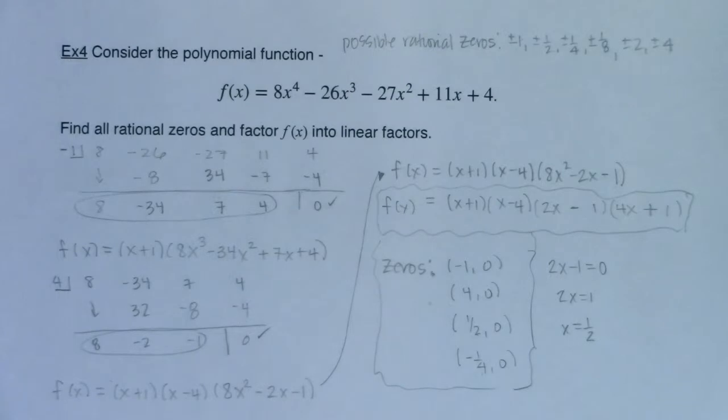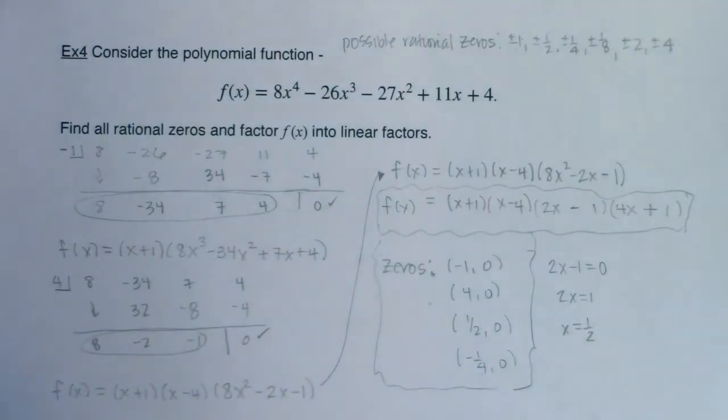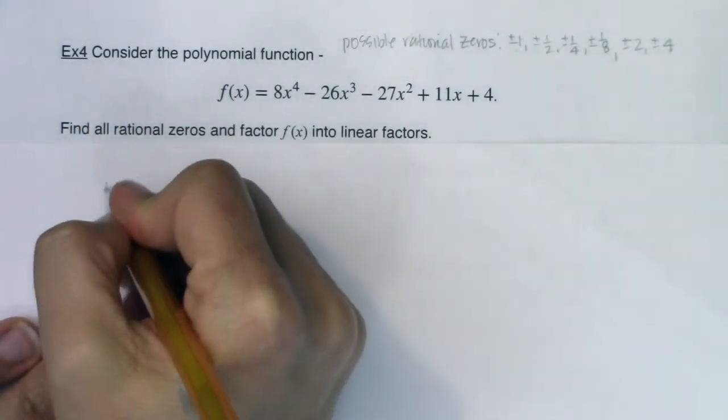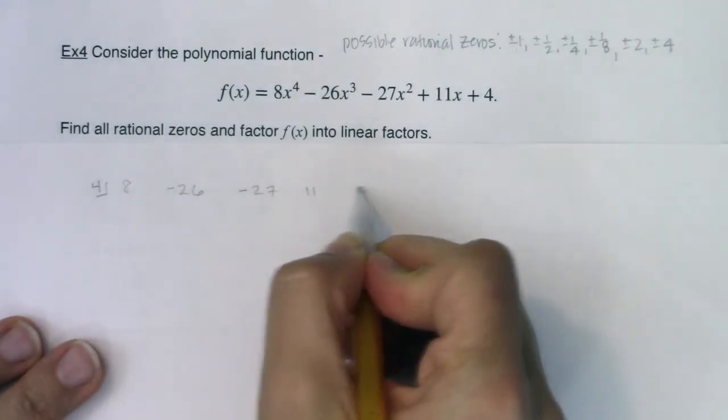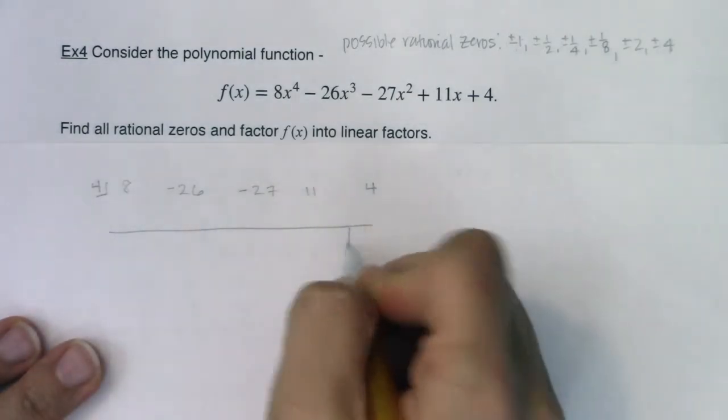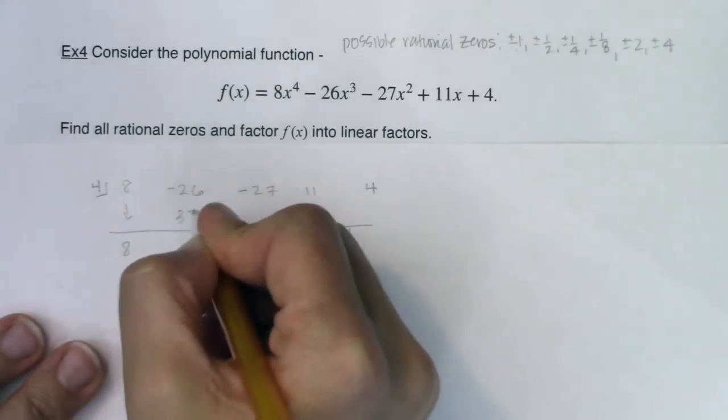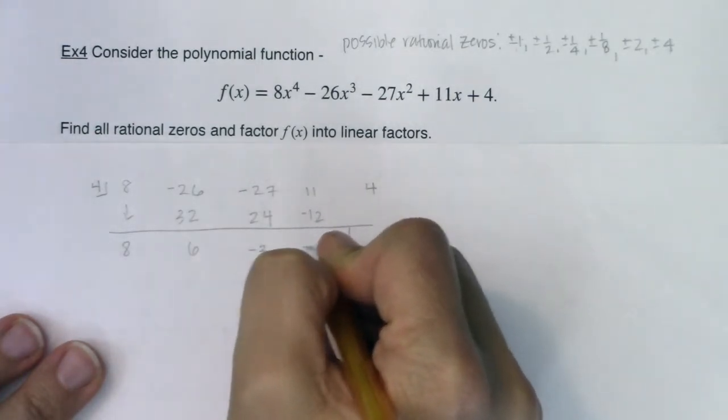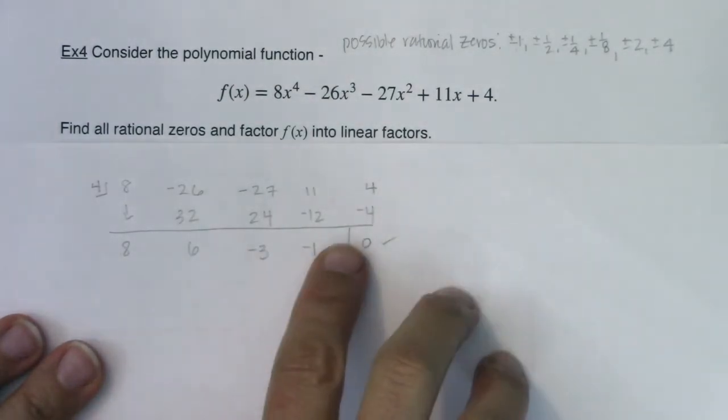So a couple of things that I want to mention. Some people might be asking, well, what happened if you had tried four first and then one? I want you to see what this would have looked like if I went in the other direction. So what would have happened if I did four first? If I had eight, negative 26, negative 27, 11, and four, I want you to see that you're going to wind up in the same spot. You're just going to take a slightly different path. So this would be eight, this would be 32, this would be six, 24, negative three, negative 12, negative one, negative four, and zero. So that would have worked out. We knew four was a zero.